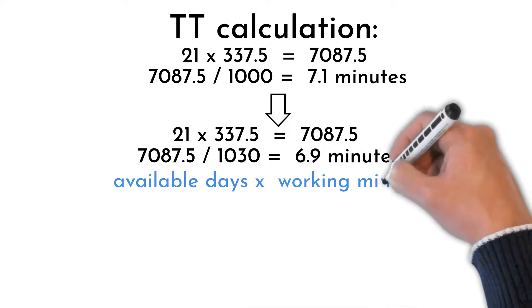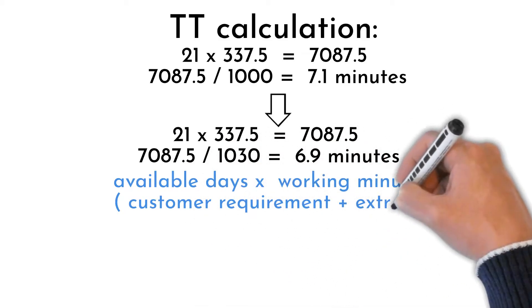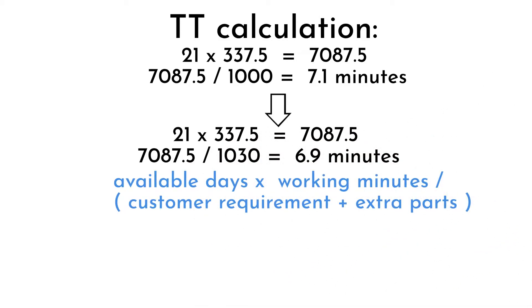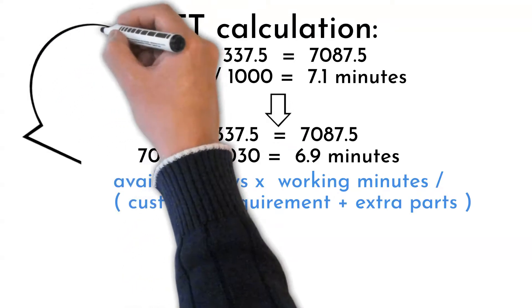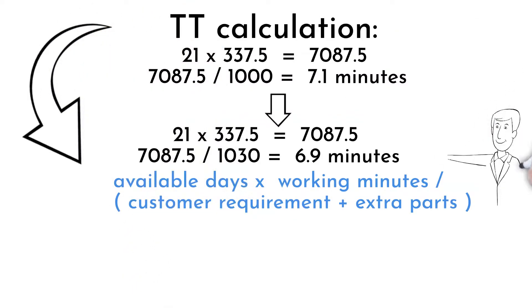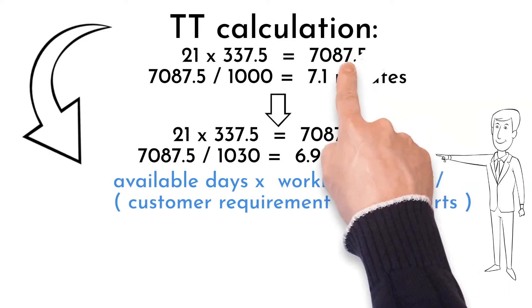Formula explanation: available days per month times number of working minutes per day divided by customer requirement or targeted production with extra parts added. We cannot work on takt time anymore if we want to satisfy customer. Here is where cycle time comes to place.